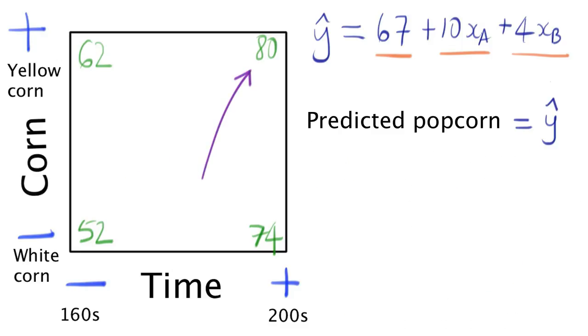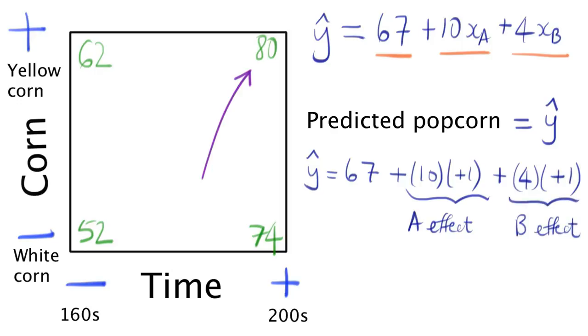Let's try making a prediction over here, at the top right-hand corner, where we had both long cooking times and yellow corn. The prediction still has three parts. We add up our baseline value of 67, plus 10 units due to the longer time with the plus 1 multiplier. And the additional 4 popcorns are due to multiplying by plus 1 for the corn type. We get a total value of 81. That's really a good prediction.